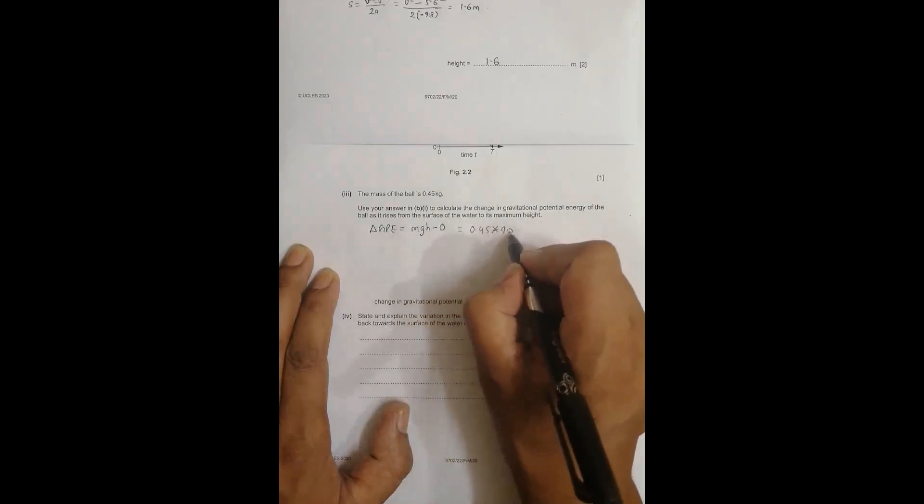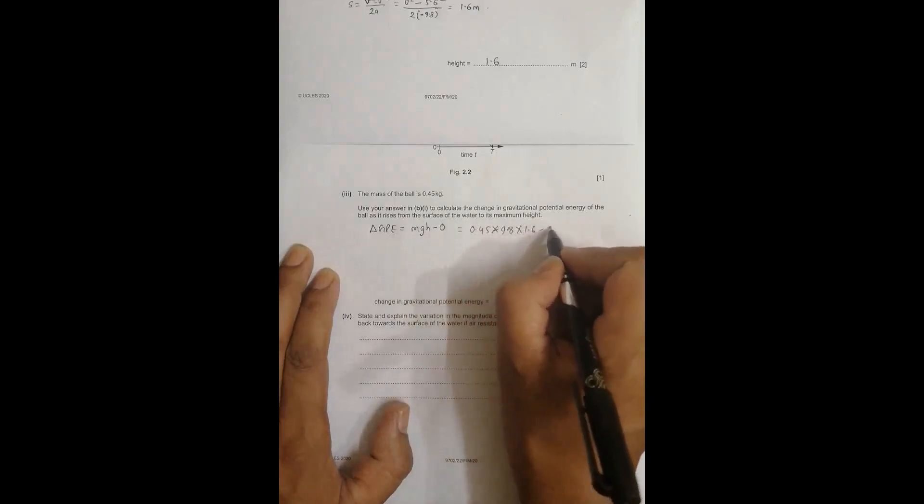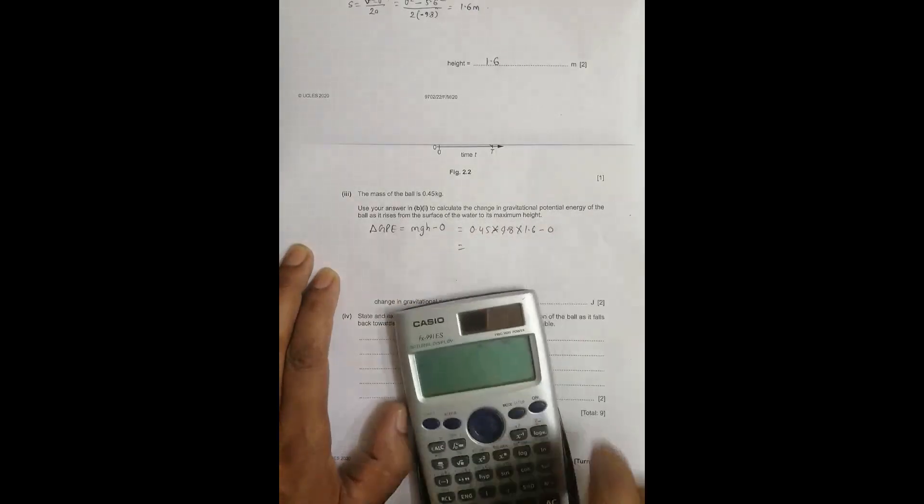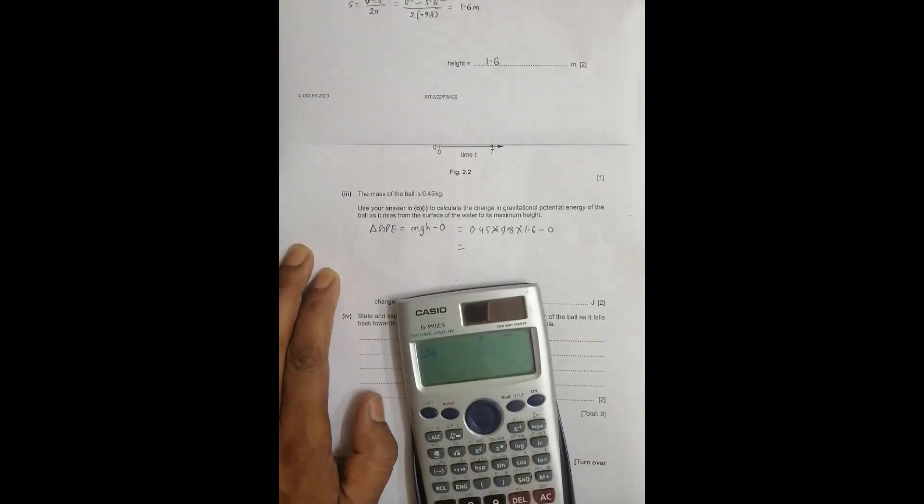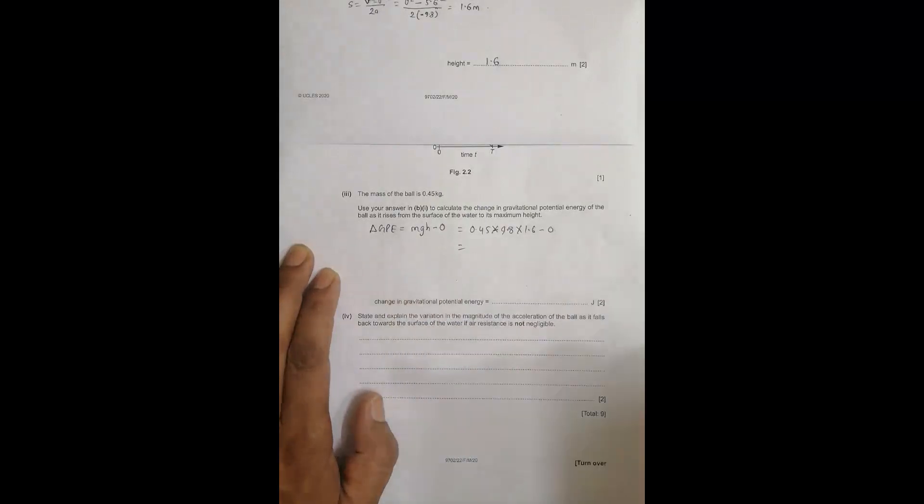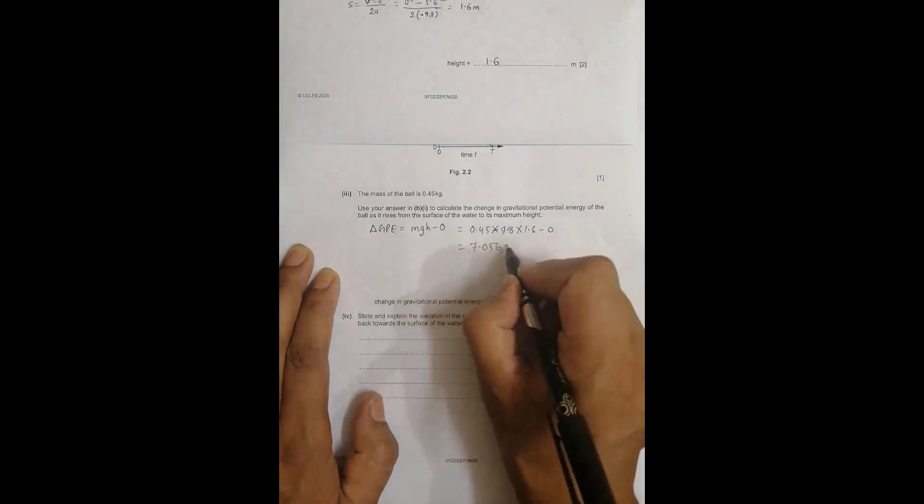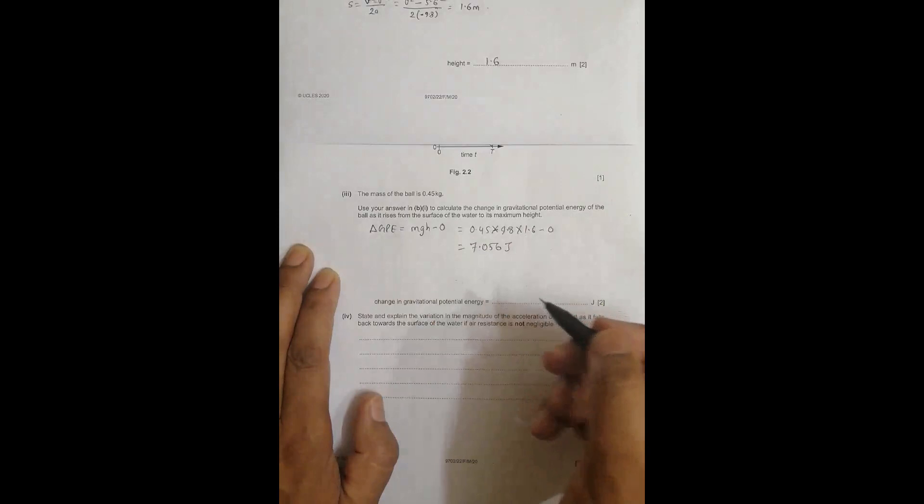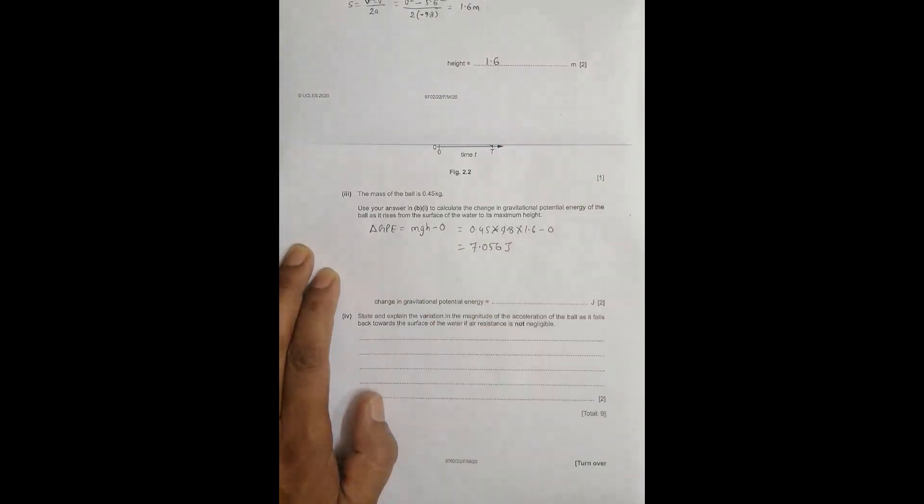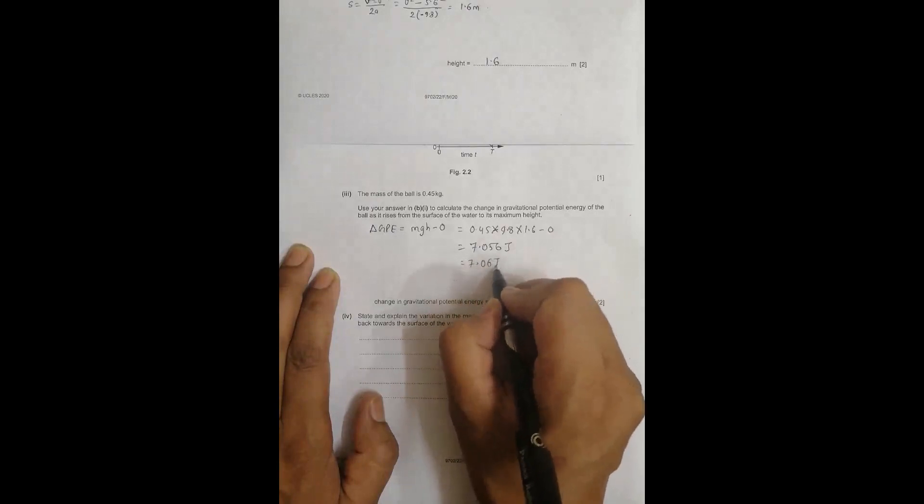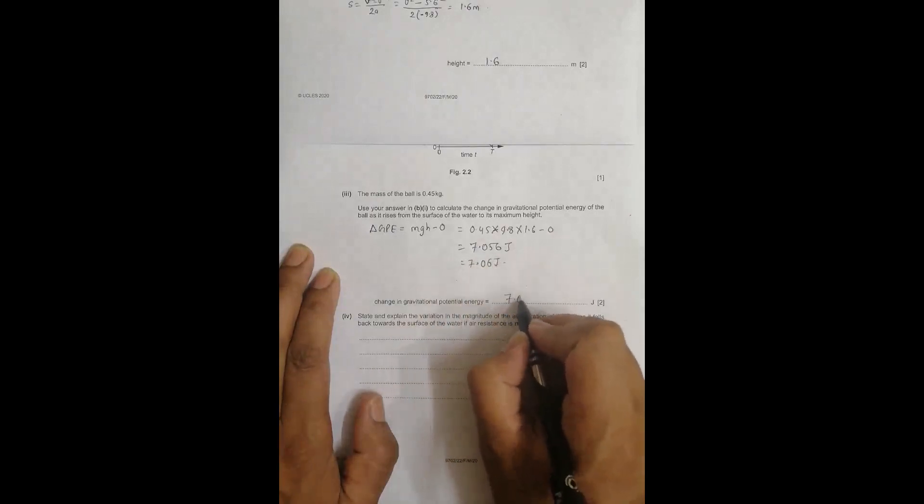This equals 0.45 times 9.8 times 1.6 minus 0. The calculation gives 0.45 times 9.8 times 1.6 equals 7.056 joules. Expressing this in 3 significant figures, as we did earlier, gives 7.06 joules.